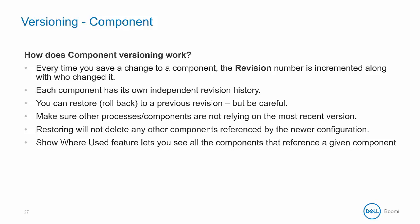Source control is done in AtomSphere, so you may wonder how to handle versioning. It's important to understand that each component has its own independent revision history. So each and every time you save a change to any component, a revision number is incremented along with who made the save.